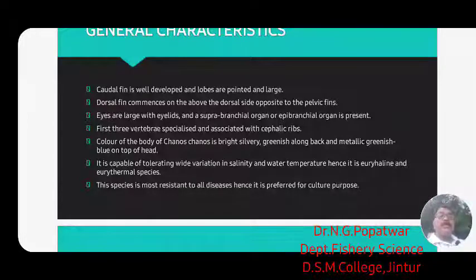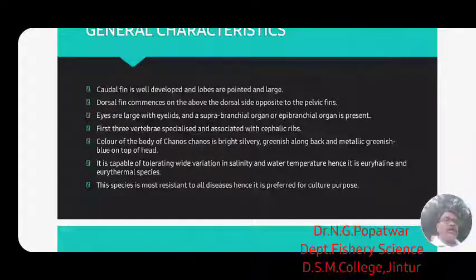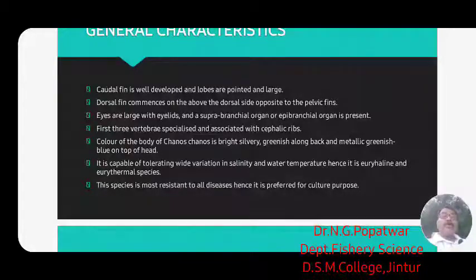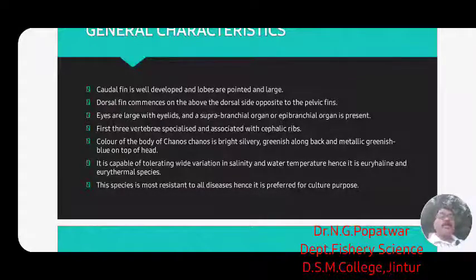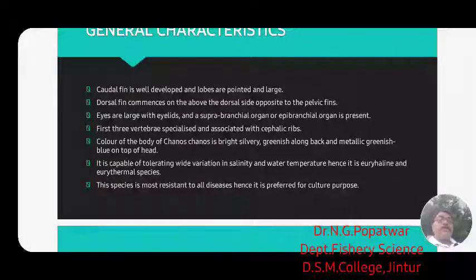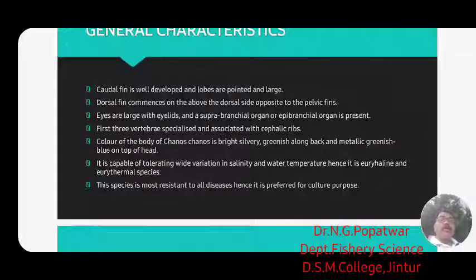Eyes are large with eyelids, and a supra-branchial or epibranchial organ is present in the eye region. The first three vertebrae are specialized and associated with cephalic ribs. The color of the body of Chanos chanos is bright silvery, greenish along the back, and metallic greenish-blue on the top of the head.